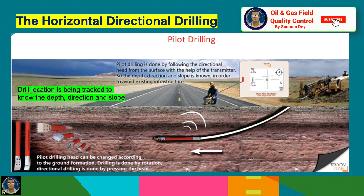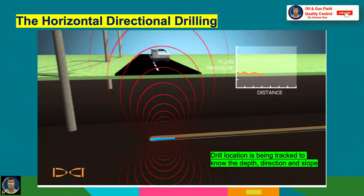The pilot drilling is guided by a directional head from the surface with the help of a transmitter, so the depth, direction, and slope are known in order to avoid existing interferences. Drill location is tracked to know the depth, direction, and slope, so the pipe does not go in the wrong direction. A tracker is installed with the cutter assembly and an expert always monitors the direction, depth, and slope. You can see how the tracker transmits the signal and helps confirm the depth where the pipe is going, exactly along the designed path.